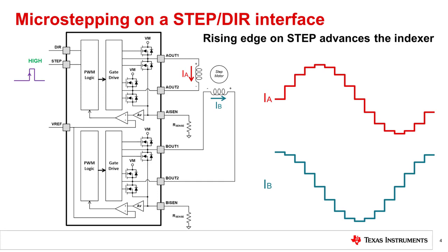Some drivers have indexer tables that can accommodate microstep modes down to 1/256 microstepping. The voltage on the VREF pin determines the full scale current of the driver. Drivers with a step direction interface automatically regulate the current in the motor windings using current chopping. The type of current chopping technique is chosen by selecting the decay mode on the stepper driver.